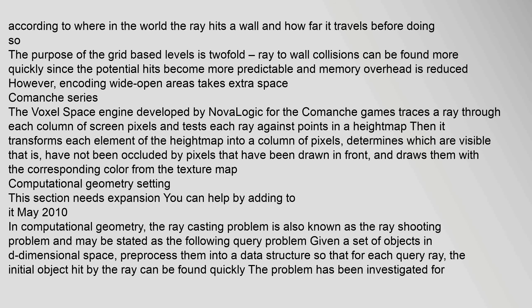Comanche series: The voxel space engine developed by Novalogic for the Comanche games traces a ray through each column of screen pixels and tests each ray against points in a height map. It then transforms each element of the height map into a column of pixels, determines which are visible — that is, have not been occluded by pixels that have been drawn in front — and draws them with the corresponding color from the texture map.